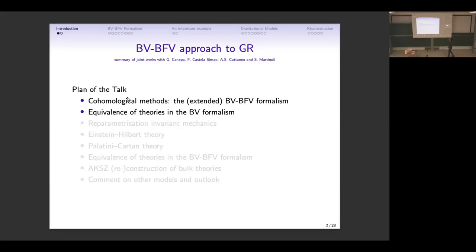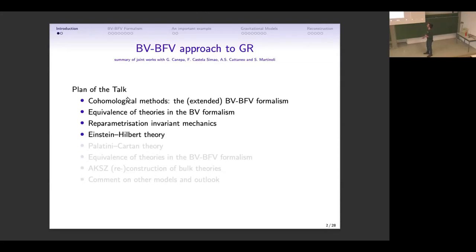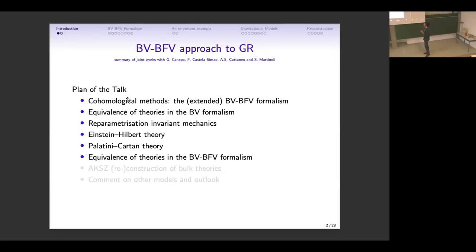I will also comment on the notion of equivalence of field theory in the BV-BFV formalism and how this becomes relevant when talking about general relativity. I will provide a simple but central example of what I will say later in more complicated examples, which is a version of classical mechanics that is reparameterization invariant. Then I will go to the serious stuff, talking about Einstein-Hilbert theory, phrasing it in the Batalin-Vilkovisky formalism with boundary. I will also discuss another formulation of general relativity that goes under the name of Palatini-Cartan, or Einstein-Cartan — it has many names.